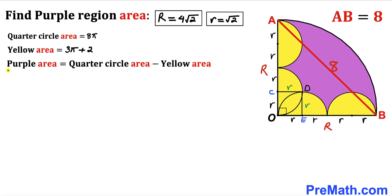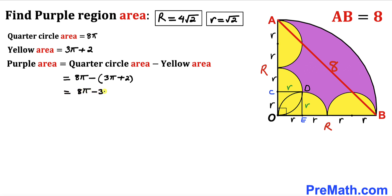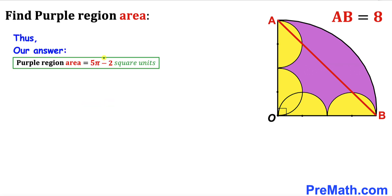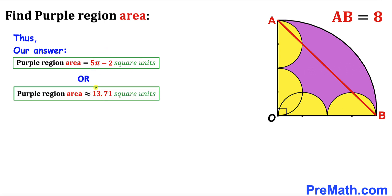For our final step, the purple region area equals the quarter circle area minus the yellow area: 8π − (3π + 2) = 8π − 3π − 2 = 5π − 2. So the purple shaded region area is 5π − 2 square units, which is approximately 13.71 square units. Thanks for watching and please subscribe to my channel for more exciting videos!